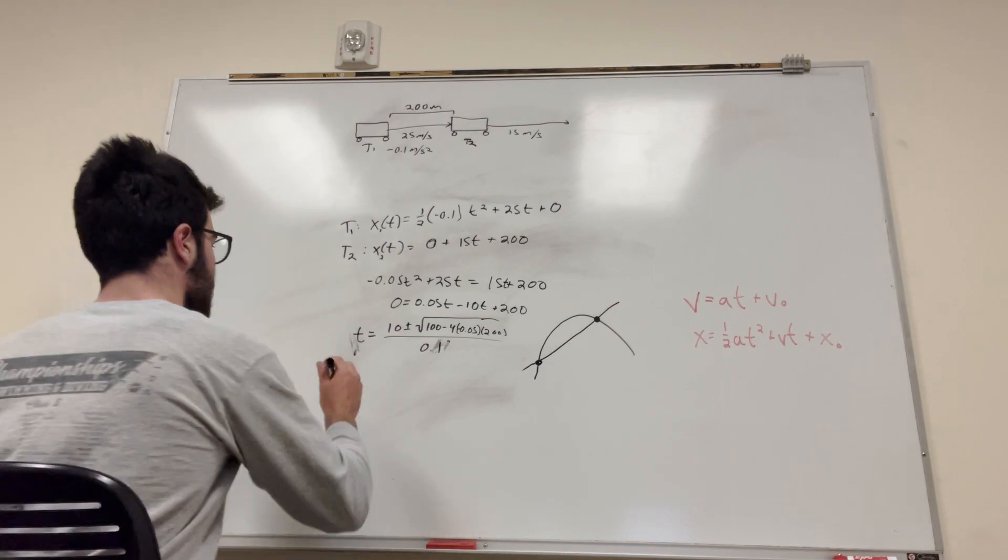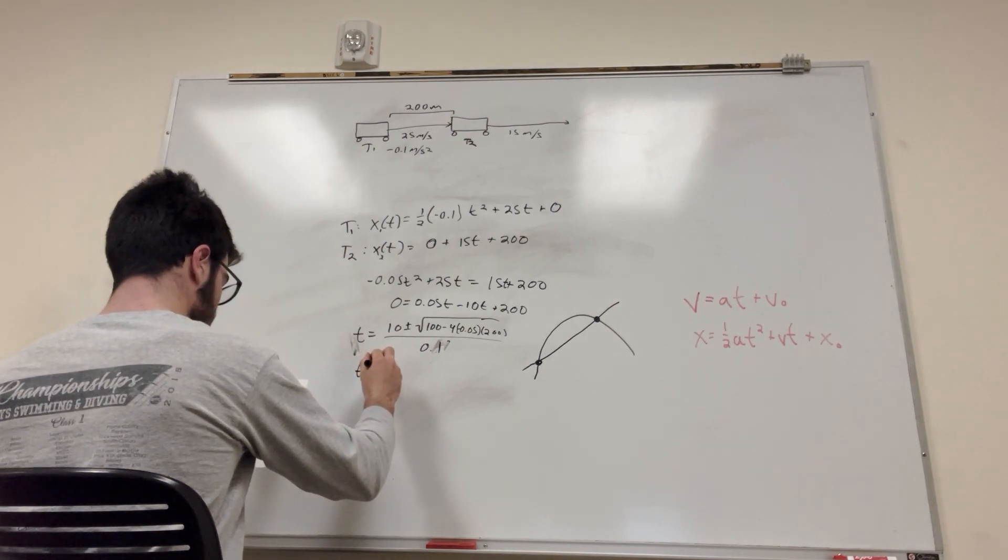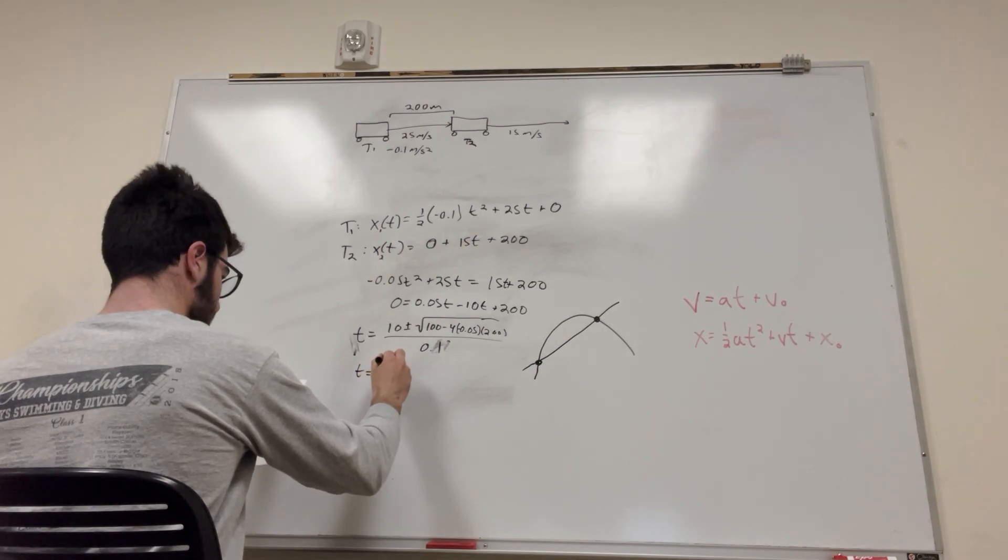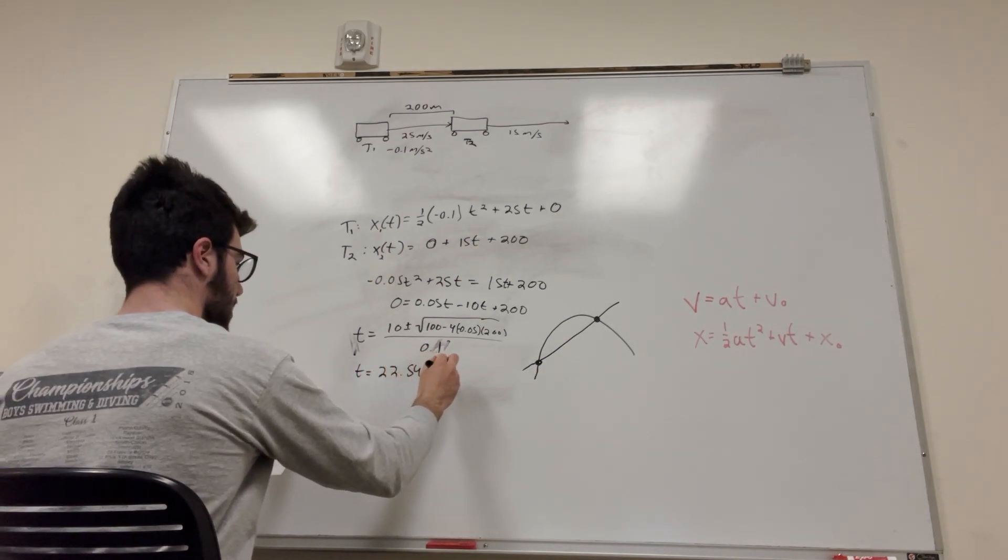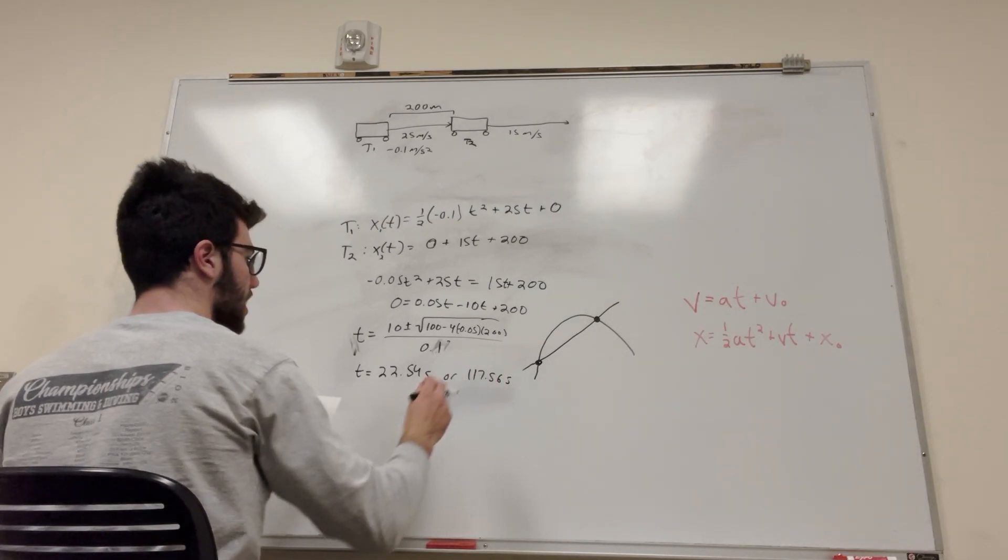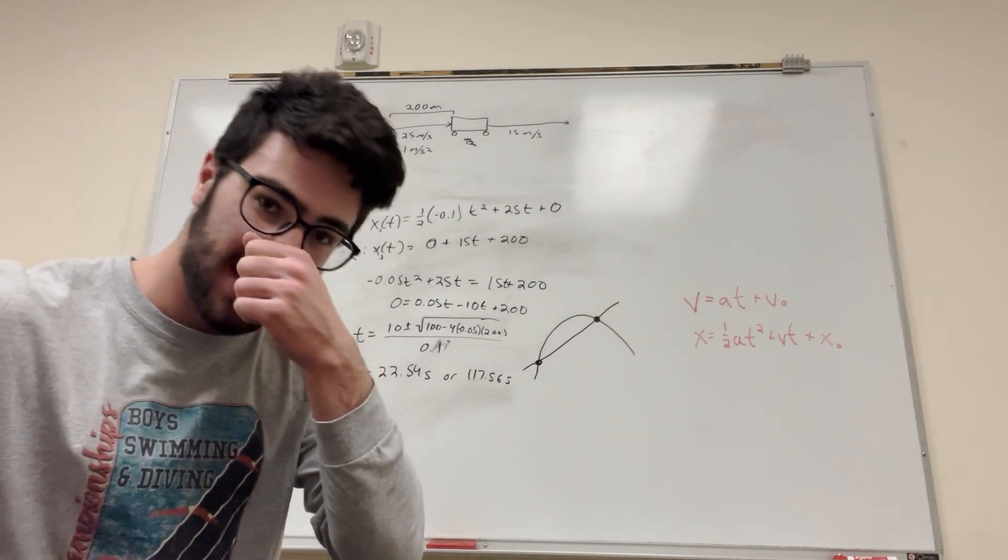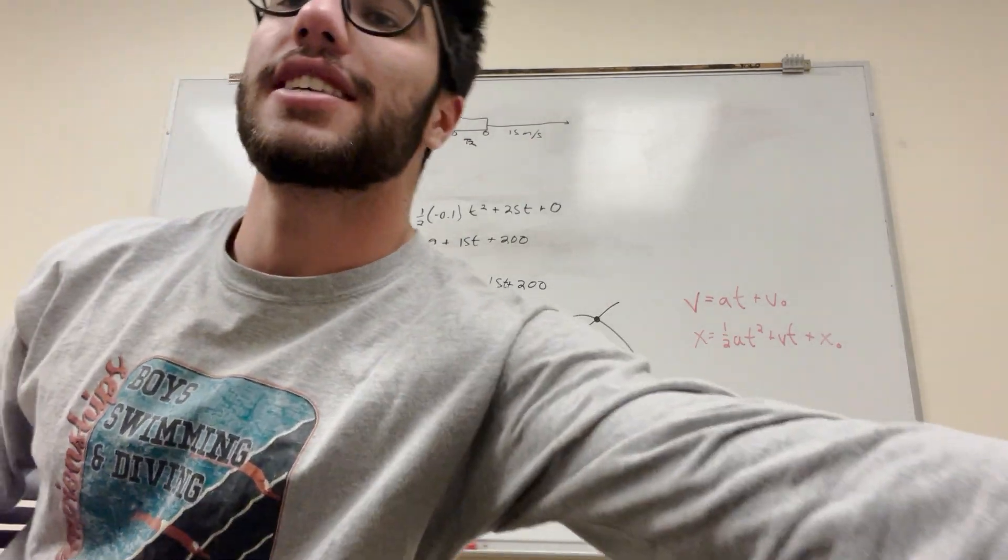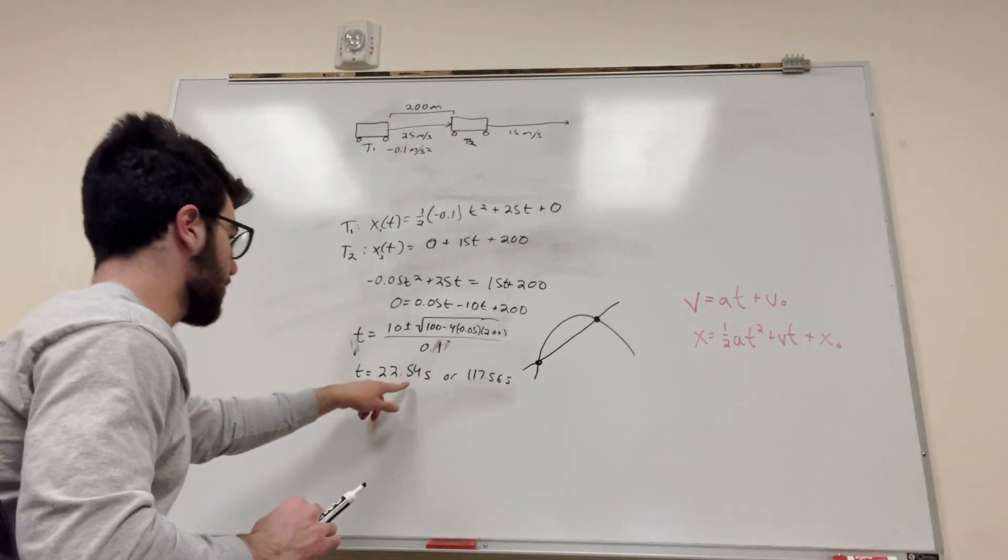I should have wrote this somewhere. Okay, here it is. T is equal to 22.54 seconds or 107.56 seconds. We don't care about this one. We want to find out where they first intersect. We don't care about where they intersect second.